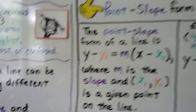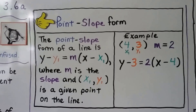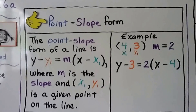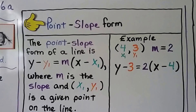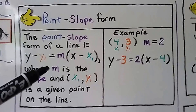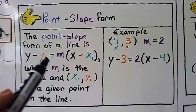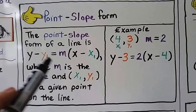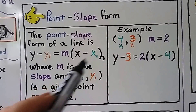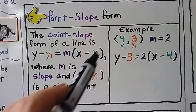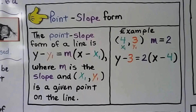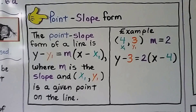Here's the point slope form of a line: y minus y sub 1 equals m times x minus x sub 1. When I say 'sub 1,' it's the little subscript down here — we call them subs for subscripts, and this means it's the first point. These are the x and y values for the first point. If there was a little 2 here, it would mean the x and y values for the second point.